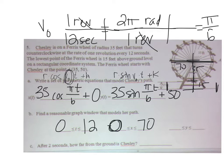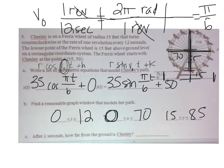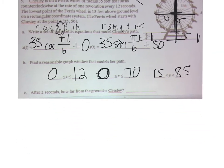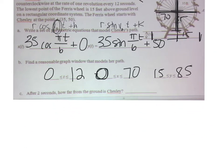And a reasonable window for the y: 15 feet is the minimum that he can be off the ground, and 85 is the maximum he can be off the ground because of that diameter of 70. 35 plus 15 is 85. So these are the equations you can put into your calculator to figure out how far off the ground is Chesley after two seconds. Let's do that real quick and I'll be right back to show you the answer.